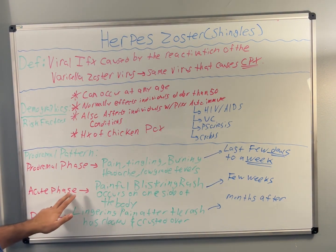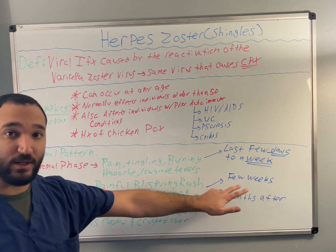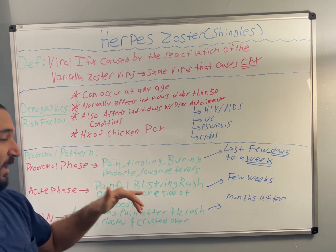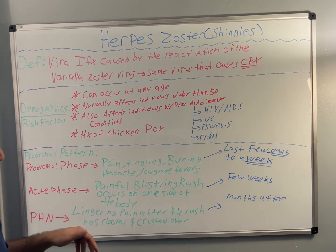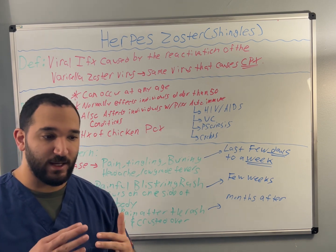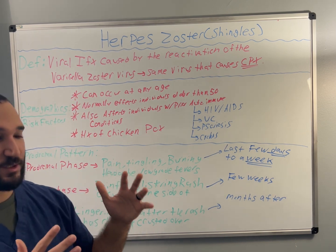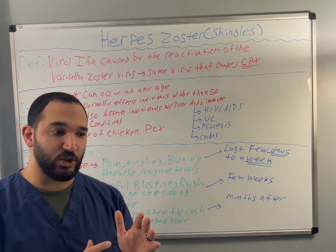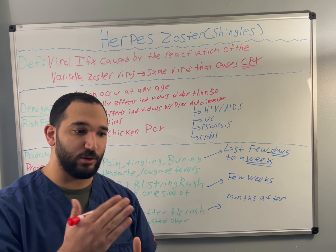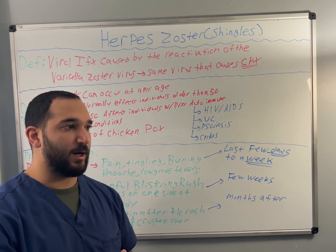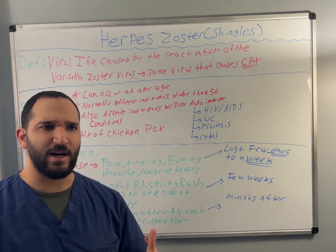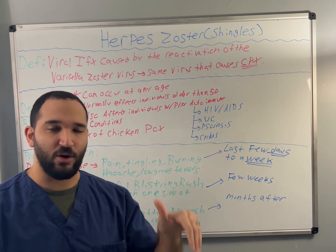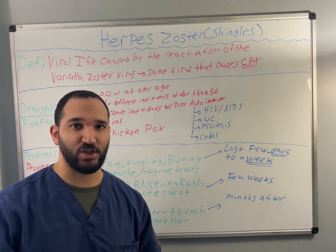The acute phase can last for a few weeks and includes painful blisters and a rash occurring on one side of the body. A key pointer for understanding herpes zoster in comparison to other skin conditions is that shingles follows a nerve pathway — it is usually unilateral, following one side of a nerve path like a strip.